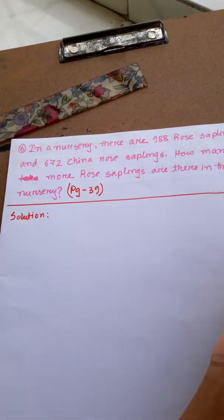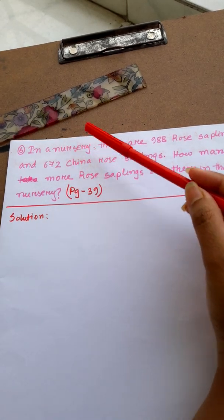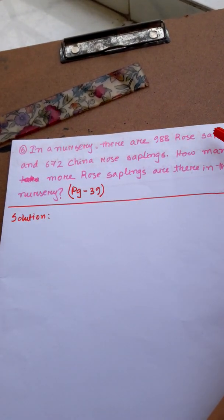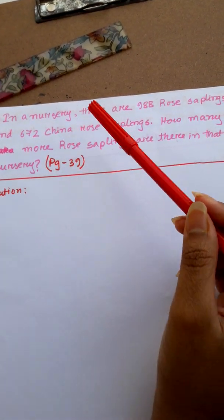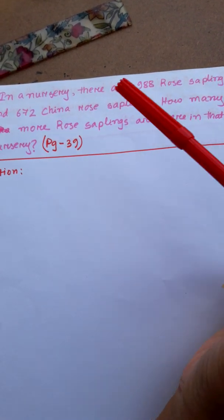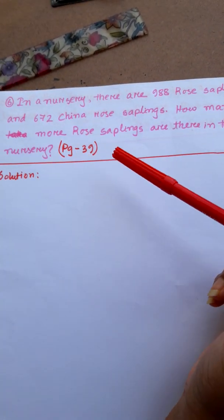The next math is number 6. In a nursery, there are 988 rose saplings and 672 china rose saplings. How many more rose saplings are there in that nursery?